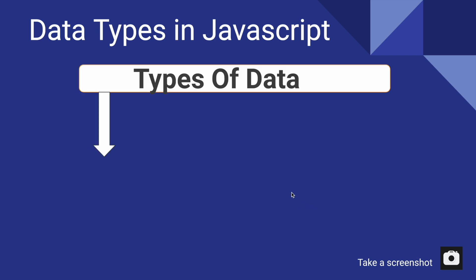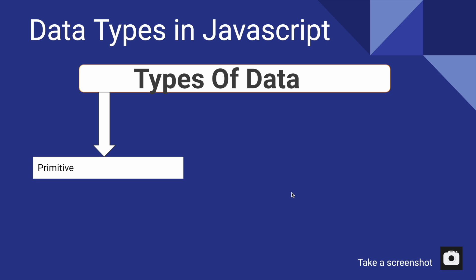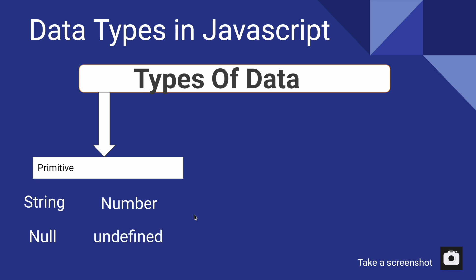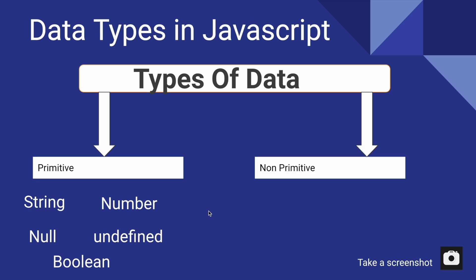The first category is primitive data types. Let's first learn how data types are classified into primitive and non-primitive. In primitive data types we have: string, number, null, undefined, and boolean. The second category is non-primitive data types, which includes arrays and objects.